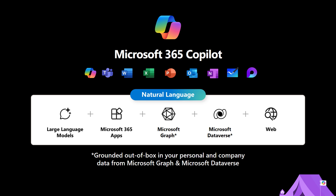Copilot is your AI assistant within Microsoft 365 apps like Teams, Word, Excel, PowerPoint, Outlook, and OneNote. It leverages large language models and web grounding and is connected to your personal and company data through Microsoft Graph and Microsoft Dataverse. Copilot helps with tasks such as summarizing meetings, managing emails, generating presentations, and analyzing data.